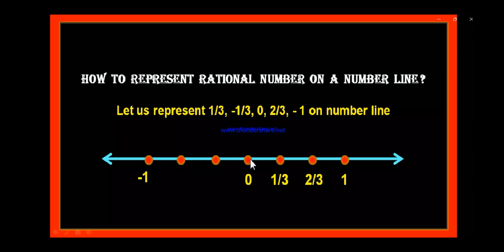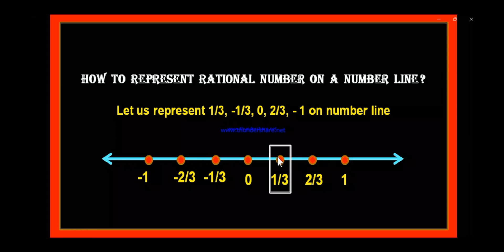Similarly, on the left hand side of 0, the first point is 1 part distance out of 3 parts from 0 to minus 1, so this point may be represented by minus 1 by 3. The second point is at a distance of 2 parts out of the total 3 parts from 0 to minus 1, so it is minus 2 by 3. After representing all these points with numbers, we find where 1 by 3 lies — this point represents 1 by 3, so let us box it. Next is minus 1 by 3, which you can find at this point — let us box minus 1 by 3.